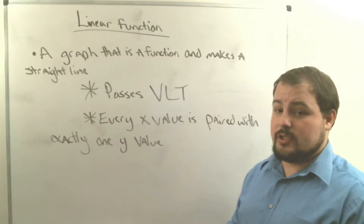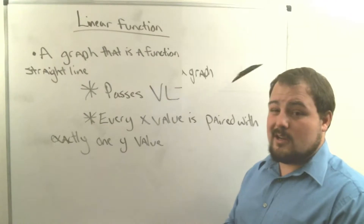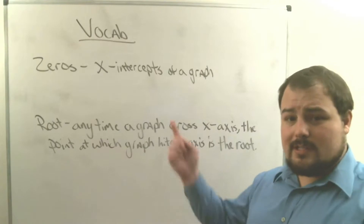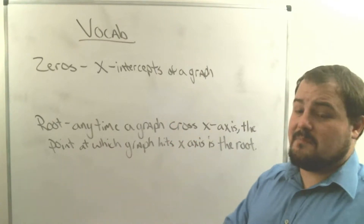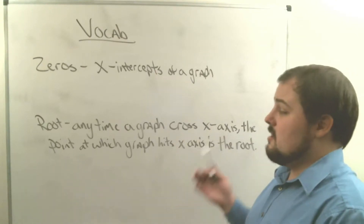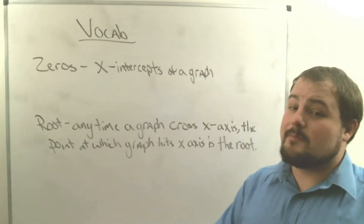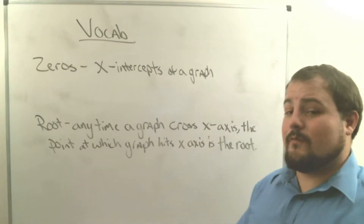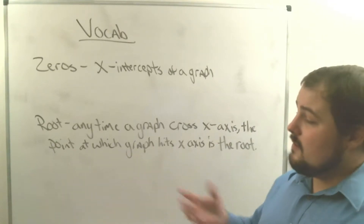We're going to find the zeros of linear functions. Two quick vocab words: we have 'zero' and 'root.' A zero is an x-intercept of the graph. A root is the same thing — it's the point at which the graph crosses the x-axis. Anytime you have an x-intercept, you also have a root. Today we're going to graph linear equations and find zeros.